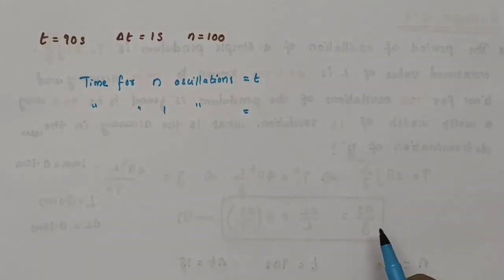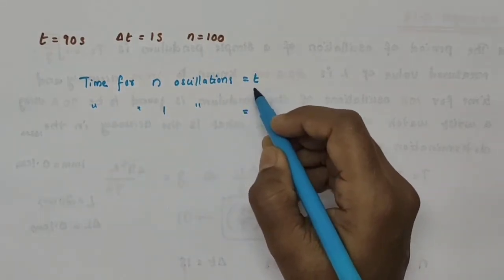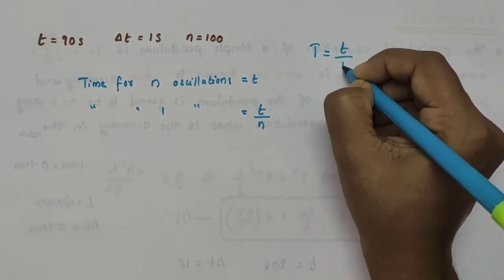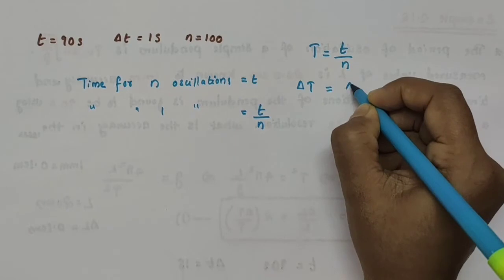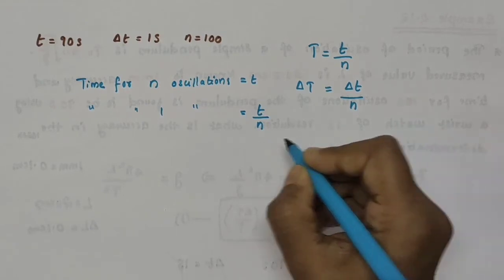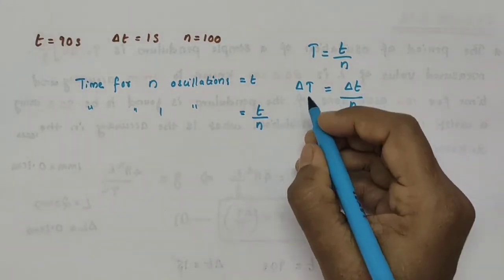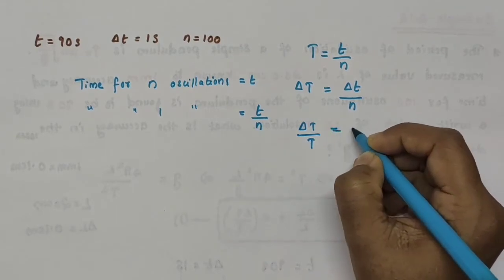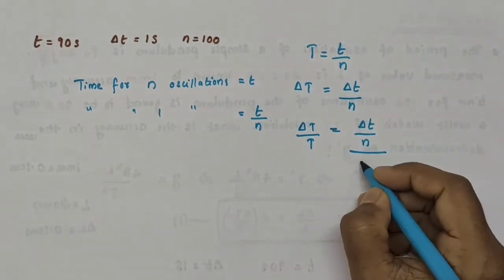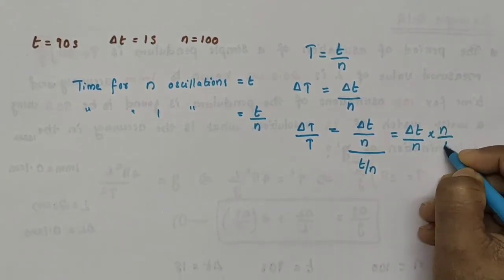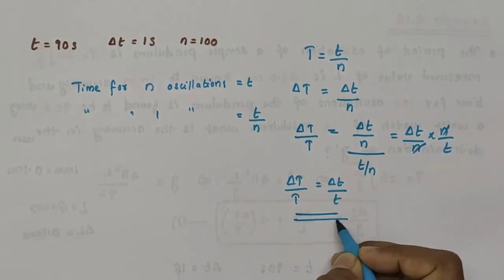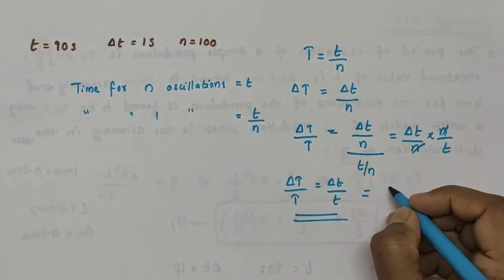The time for n oscillations is taken as t, so the time period for 1 oscillation is T = t/n, and δT = δt/n. Now the relative error in the time period δT/T = (δt/n) / (t/n) = δt/t. The n cancels, so δT/T = δt/t = 1/90.